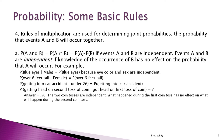Here are examples to understand independence. Suppose I take a student at random and tell you the student is male — the probability that student has blue eyes would be the same as for any student, because there is independence between sex and eye color. On the other hand, if I say the student is female, that should change the probability of the student being over six feet tall — knowing gender makes a difference in that case.